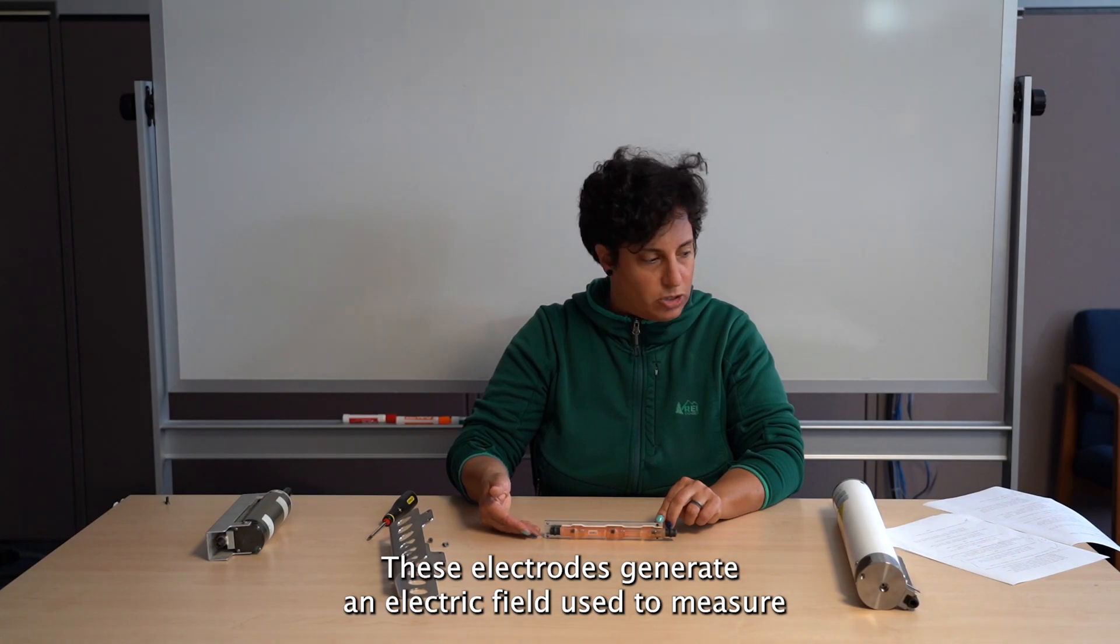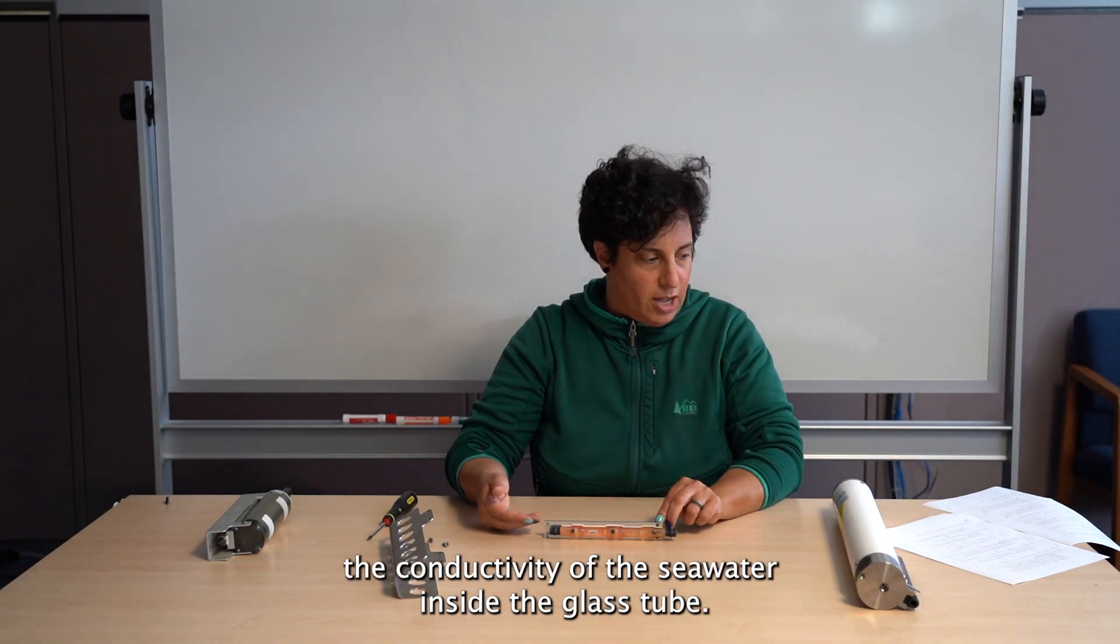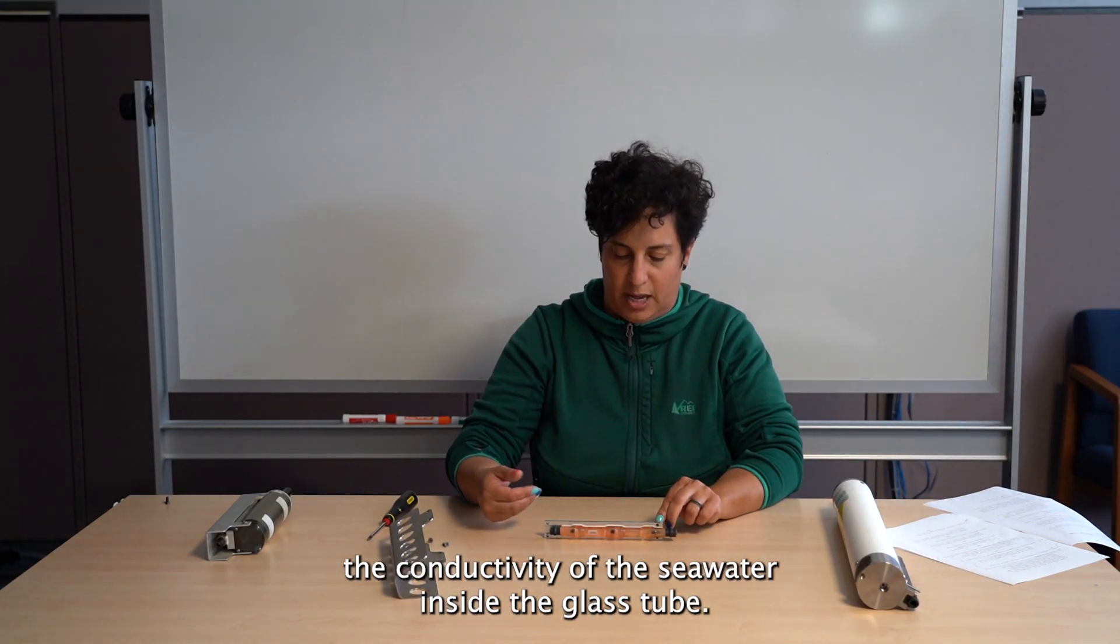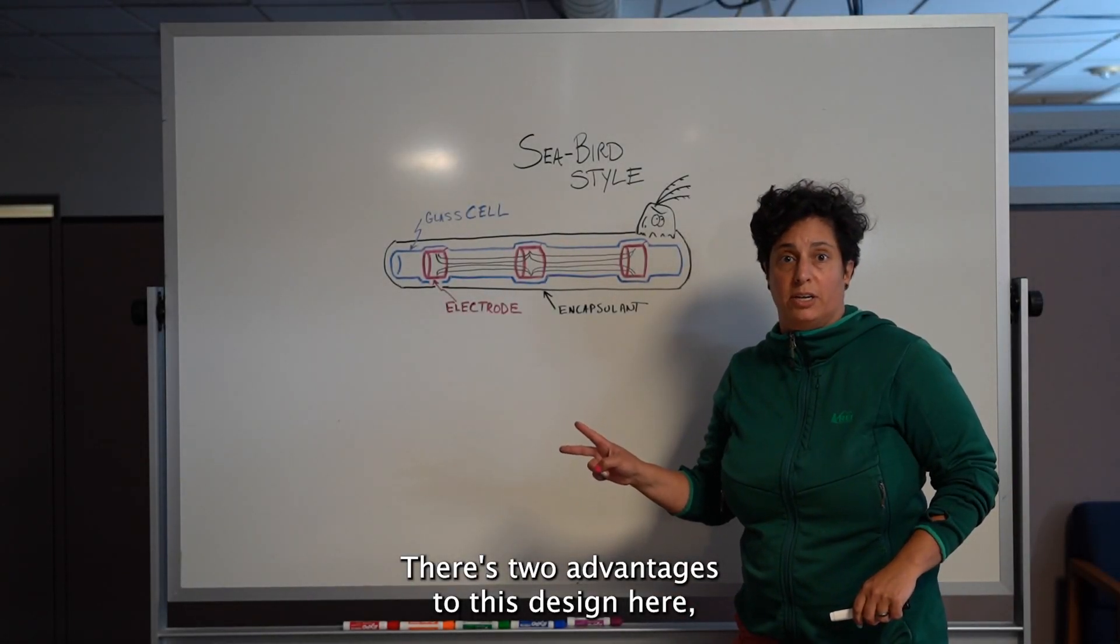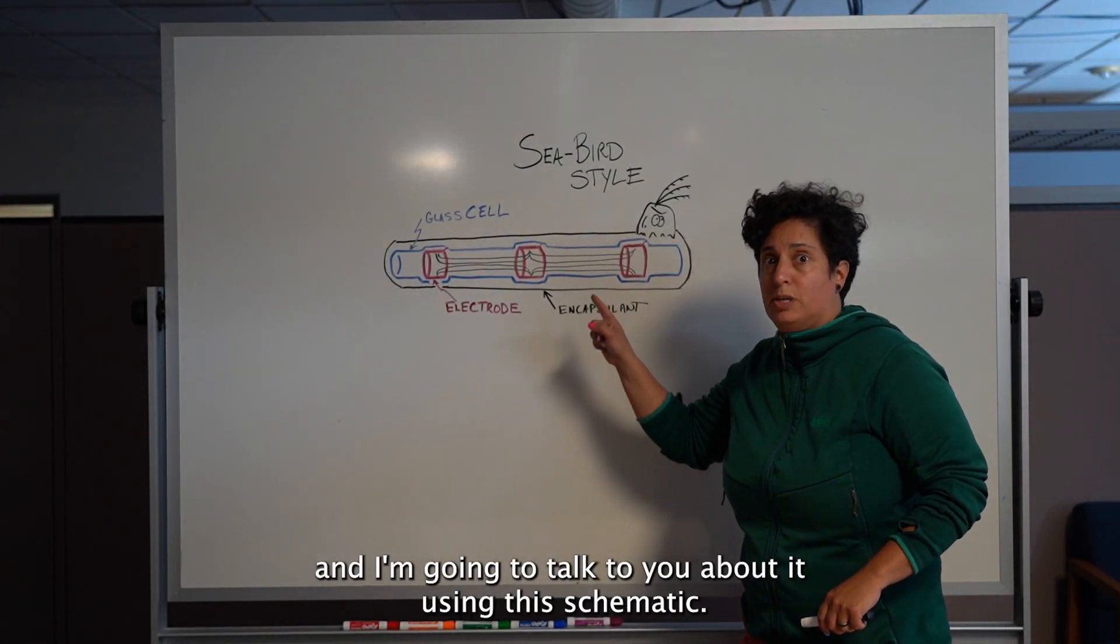These electrodes generate an electric field used to measure the conductivity of the seawater inside the glass tube. There's two advantages to this design here, and I'm going to talk to you about it using this schematic.